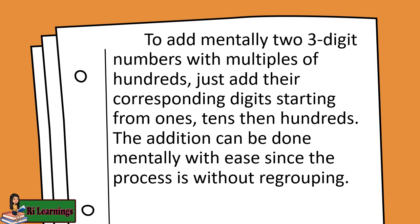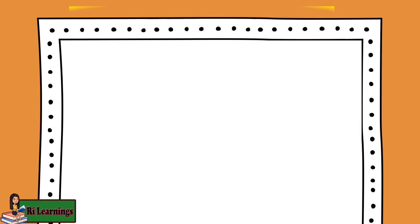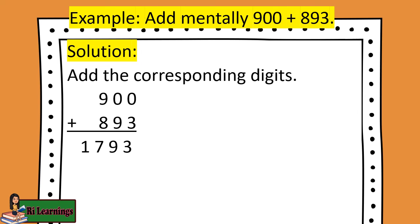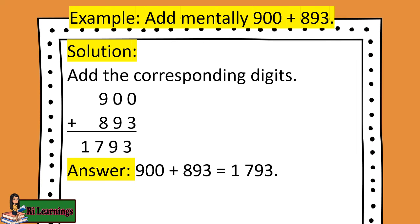To add mentally two three-digit numbers with multiples of hundreds, just add their corresponding digits starting from ones, then tens, then hundreds. This addition can be done mentally with ease since the process is without regrouping. Example: add mentally 900 plus 893. Add the corresponding digits: 0 plus 3 equals 3; 0 plus 9 equals 9; 9 plus 8 equals 17. Answer: 900 plus 893 equals 1,793.